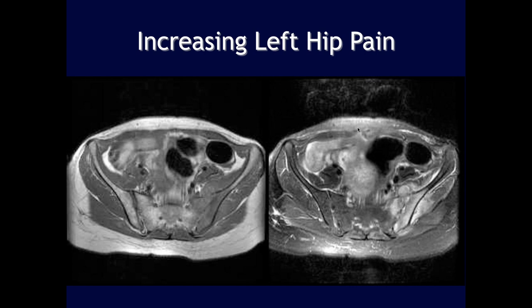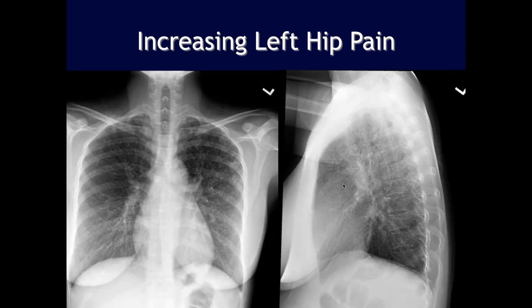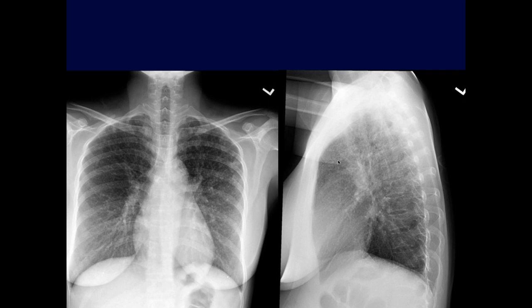This patient has increasing left hip pain with marrow edema and cortical irregularity at the sacroiliac joint on T1, and increased T2 signal extending into the iliacus and gluteus medius muscles. The chest CT shows a miliary pattern of multiple nodules throughout both lung fields — consistent with miliary tuberculosis.